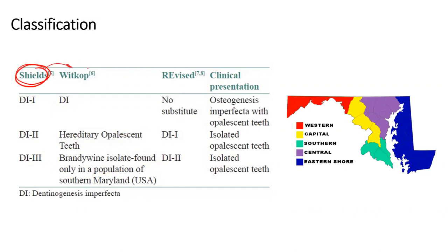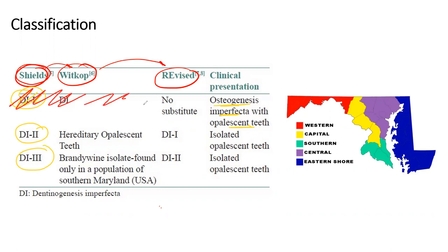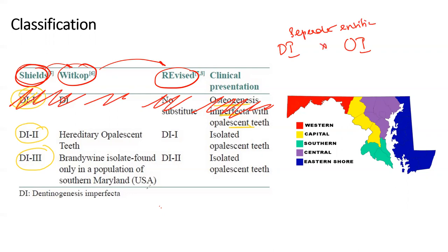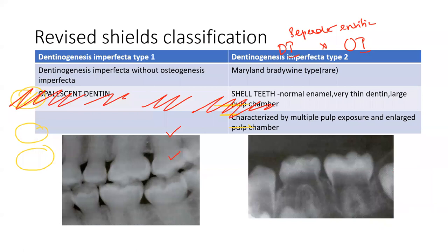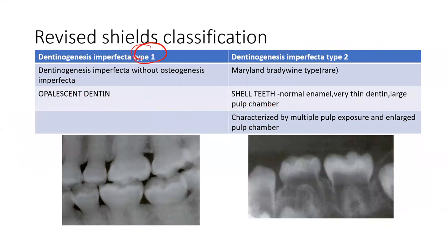Several classifications have been proposed. The first was given by Shields, later modified by Whitcorp, followed by a revised classification. Per Shields' classification there were three categories: dentinogenesis imperfecta type one, two, and three. Type one was associated with osteogenesis imperfecta with opalescent teeth. In the present classification, type three is removed because DI and osteogenesis imperfecta are now considered separate entities, leaving only two types.